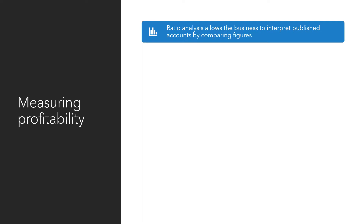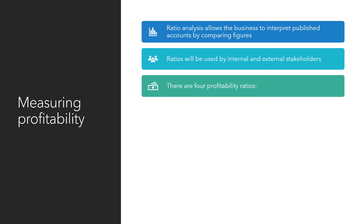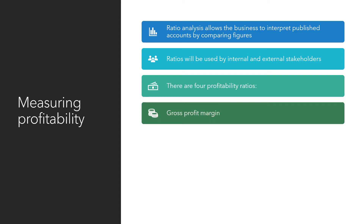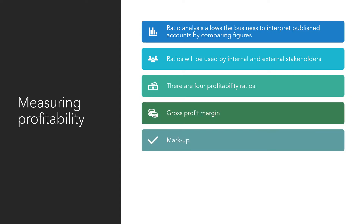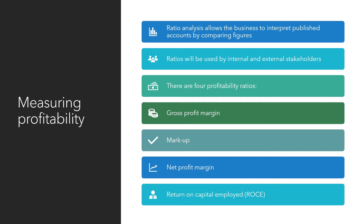Measuring Profitability. Ratio analysis allows the business to interpret published accounts by comparing figures. Ratios will be used by internal and external stakeholders. There are four profitability ratios: gross profit margin, markup, net profit margin, and return on capital employed.